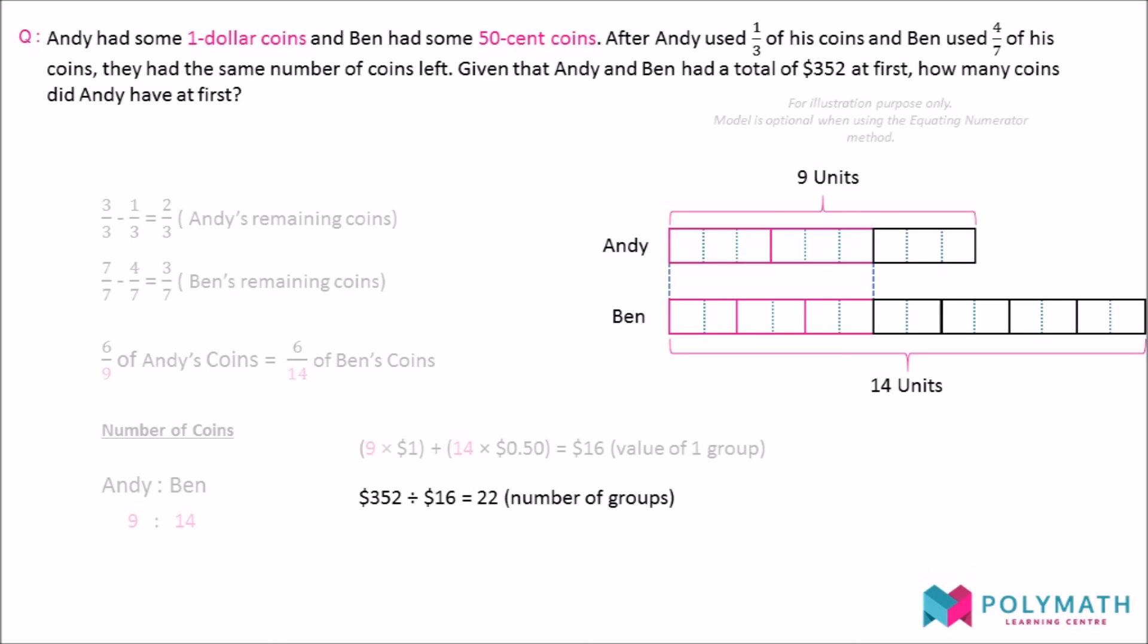Since each group has 9 of Andy's coins, we multiply 22 groups by 9 coins to get the answer, 198.